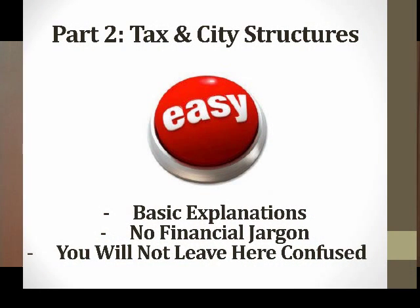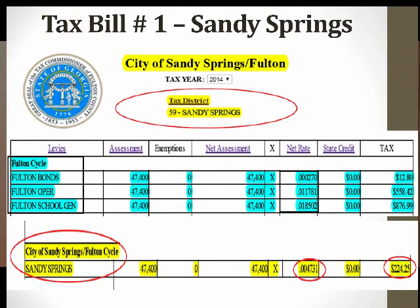Now let's talk about tax and city structures — basic explanations, no financial jargon. We're going to break down an actual tax statement. The first one is called Sandy Springs. It says City of Sandy Springs slash Fulton, tax district 59. Highlighted in green are the Fulton County taxes a Sandy Springs resident would pay: Fulton bond, Fulton operation, Fulton schools general, and the tax rate. At the bottom you see City of Sandy Springs slash Fulton cycle, with a Sandy Springs rate of .004731.